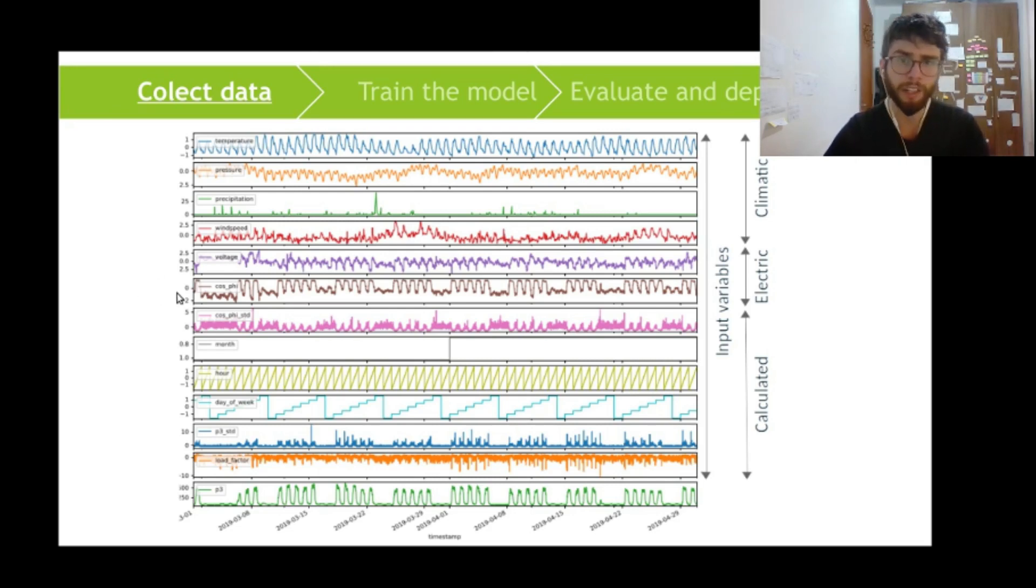And because we are aggregating over 10 minutes, we can calculate variables like the standard deviation of any variable over this interval. And we calculated the standard deviation of the power factor and of our output variable, that is the power consumption. So the power consumption is the output variable in this modeling.